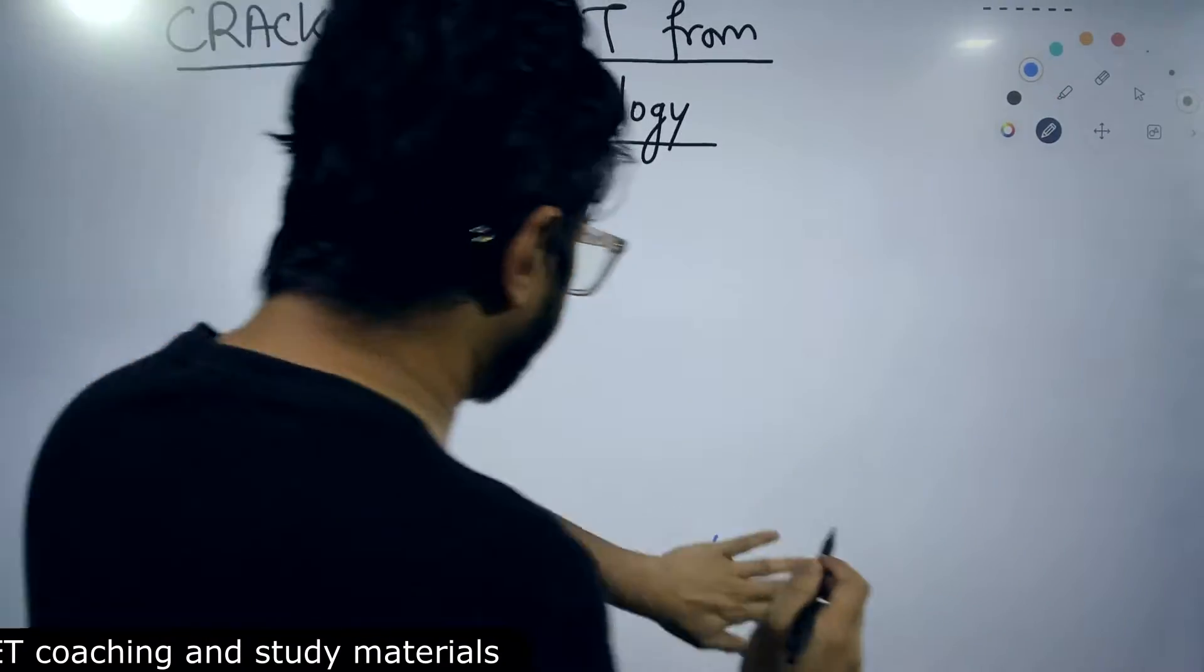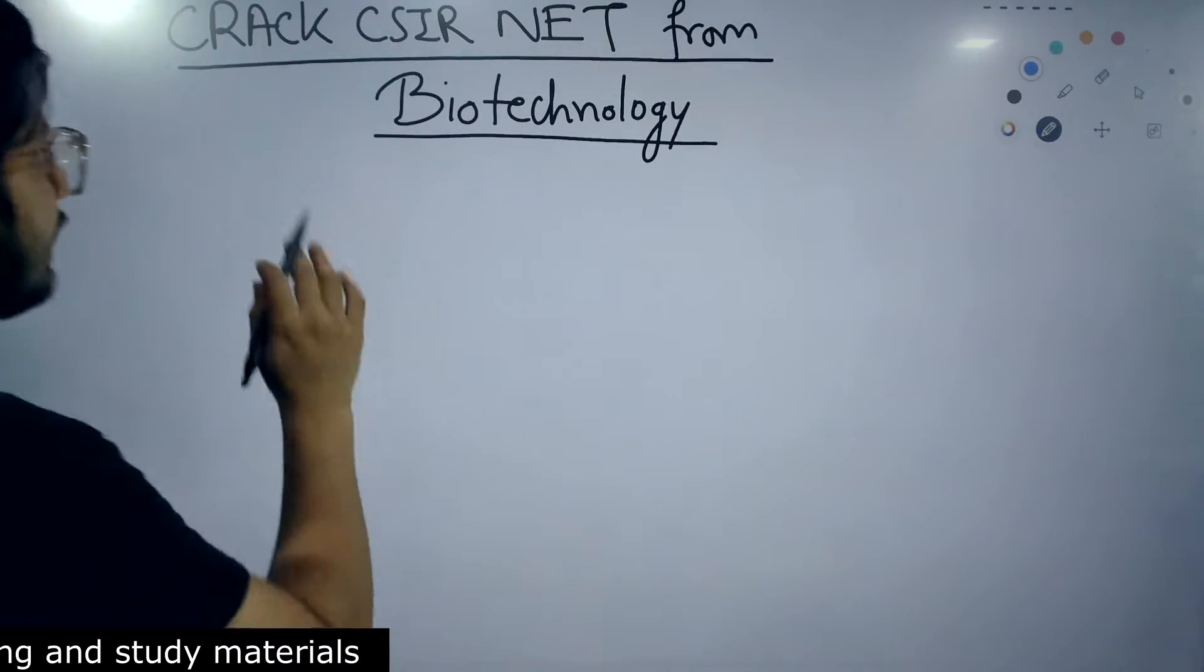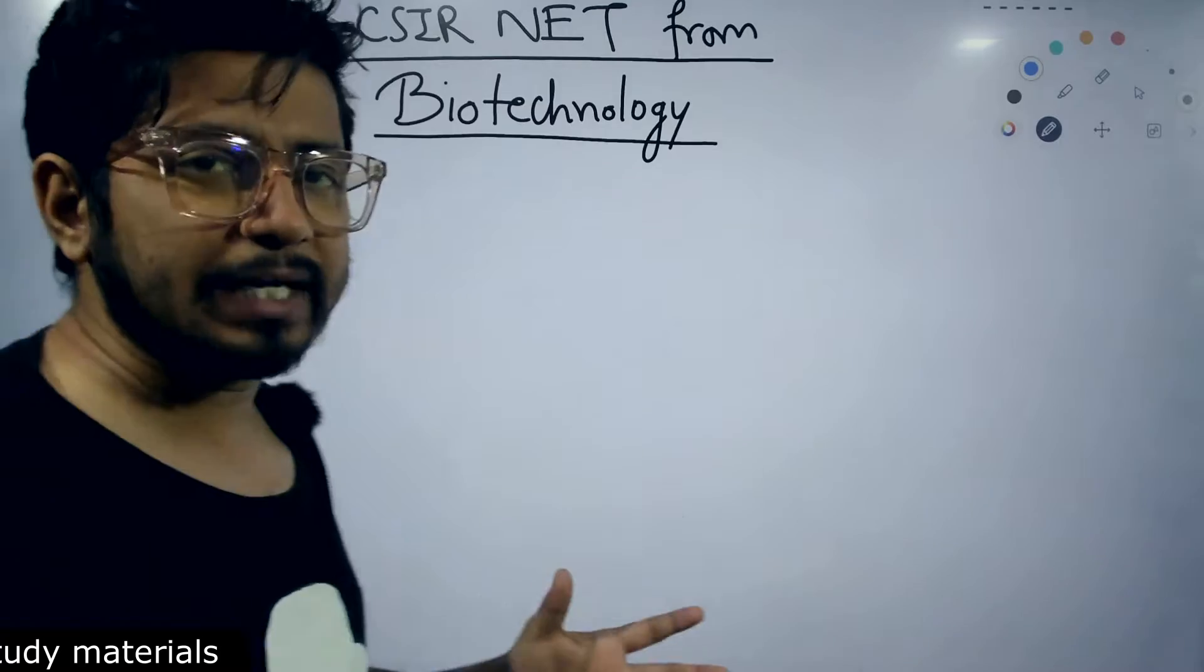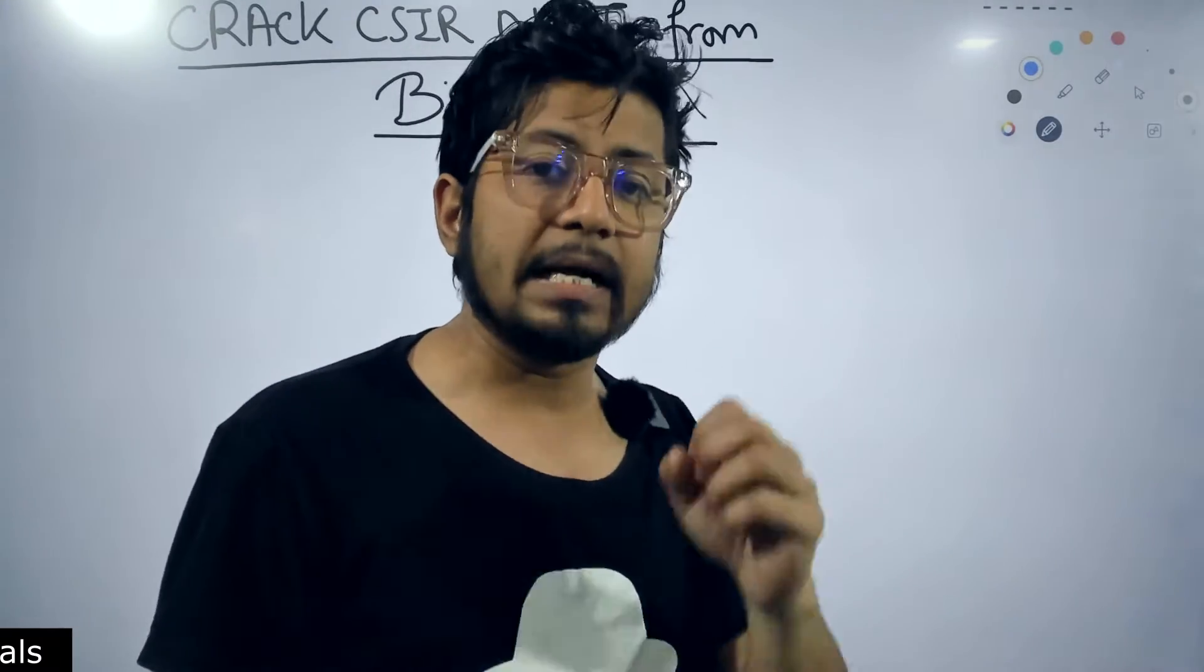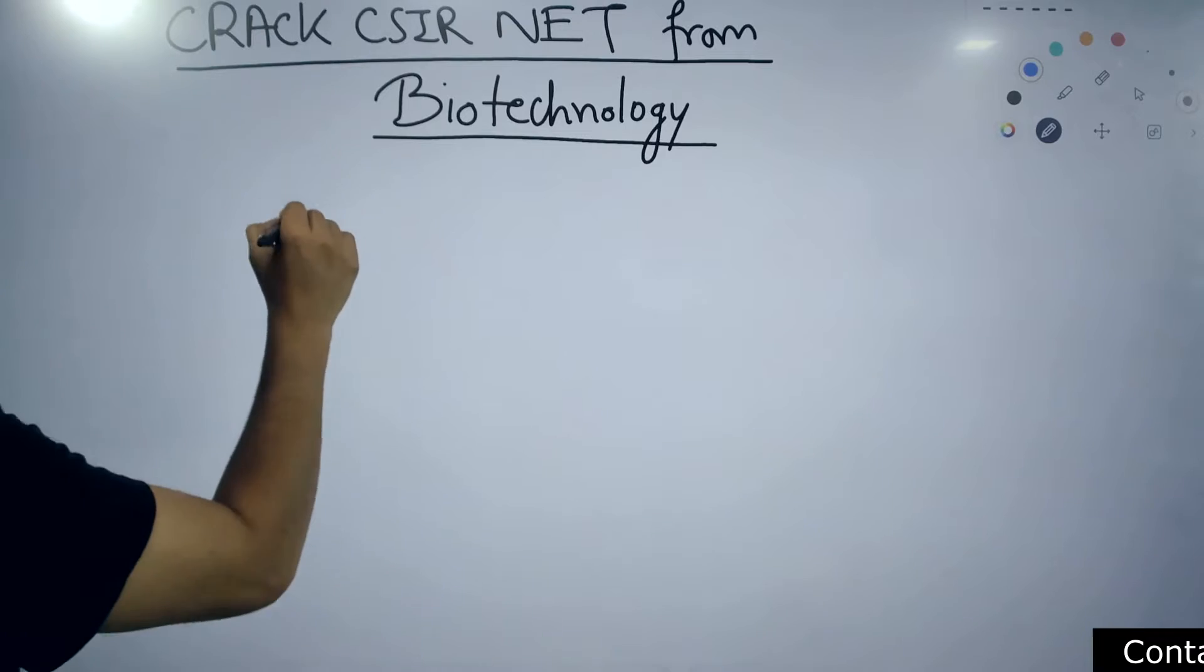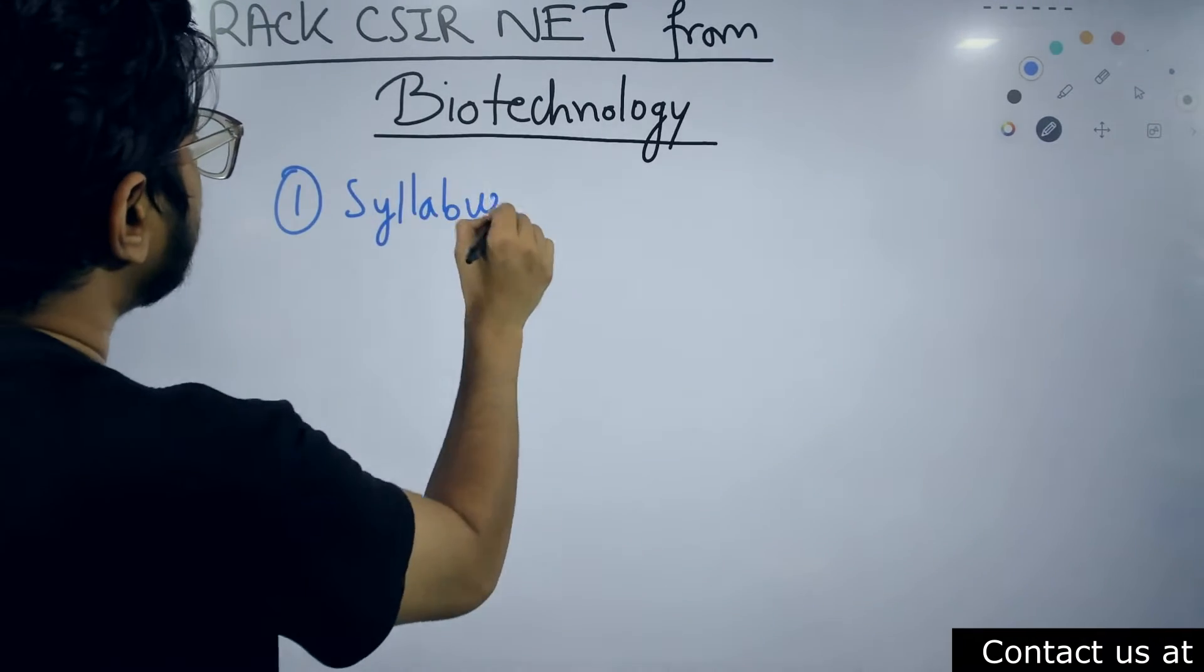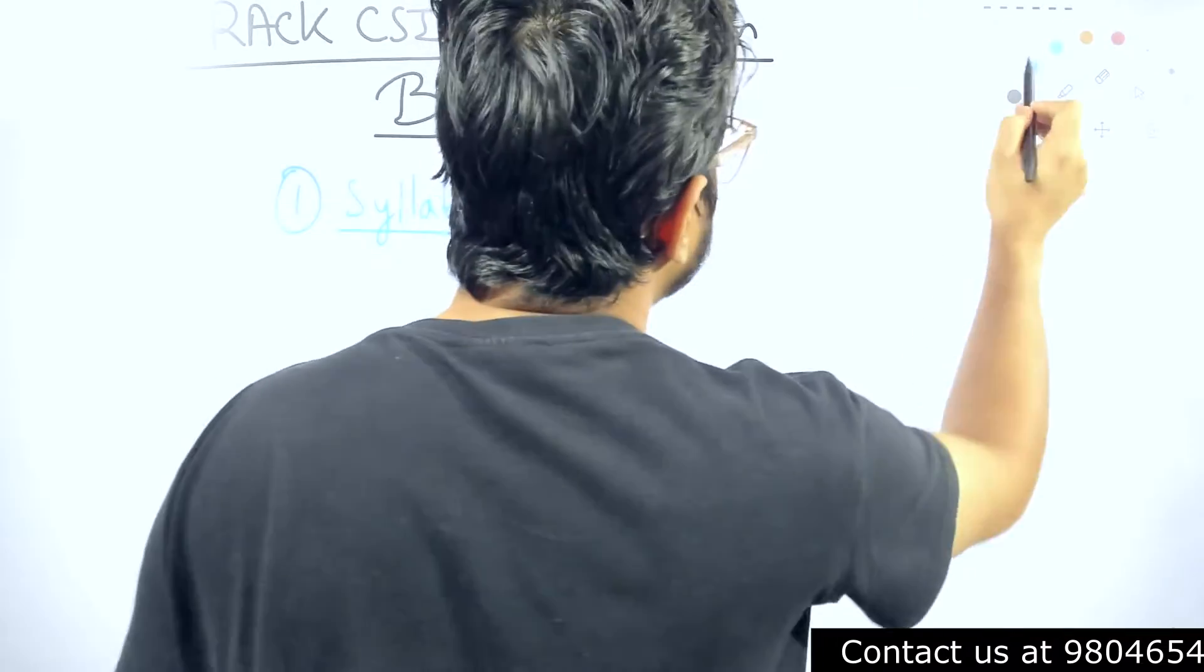That is why it is very important that we all know where we stand. From a biotechnology student, I've already explained the syllabus similarities and what to do to crack CSIR NET life science examination from zoology background. But this time, I'll be explaining how to crack CSIR NET life science from biotechnology background. First thing, if I compare the syllabus, then what part of the CSIR NET syllabus is similar to biotechnology syllabus? I'll give you a simple list.